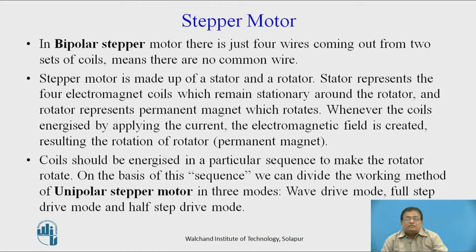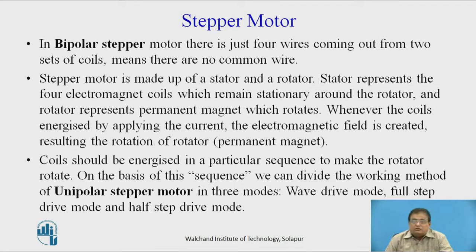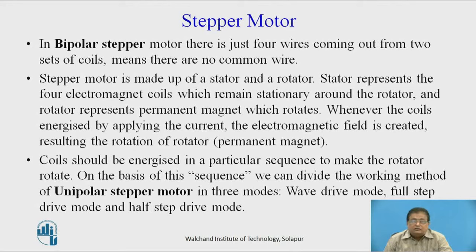In a bipolar stepper motor, there are just four wires coming out from two sets of coils, meaning there is no common wire. The stepper motor is made up of a stator and a rotator. The stator represents four electromagnet coils which remain stationary around the rotator. The rotator represents a permanent magnet which rotates. Whenever the coils are energized by applying current, an electromagnetic field is created, resulting in the rotation of the rotator.